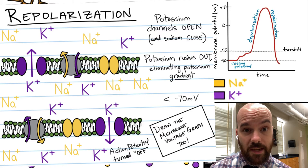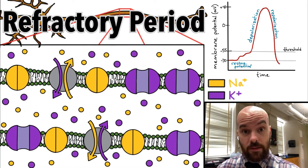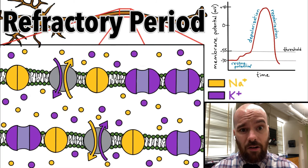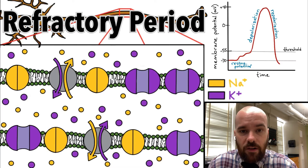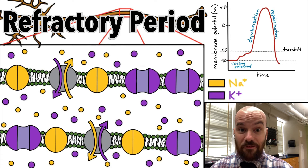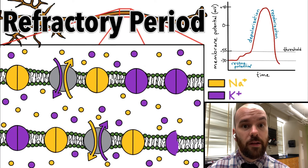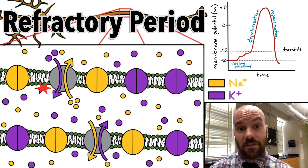At this point the action potential is over, but this neuron might need to send another one soon. Right now, though, it's not ready — if sodium channels opened, there'd be no sodium concentration gradient, so there would be no net flow of sodium into the cell and no action potential. Luckily, the sodium-potassium pump is still working. During this final stage called the refractory period, it slowly pumps out three sodiums and pumps in two potassiums, re-establishing the concentration gradients.